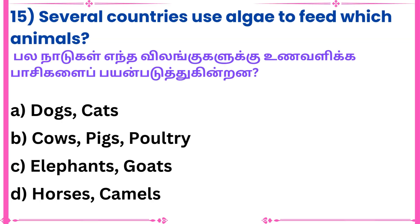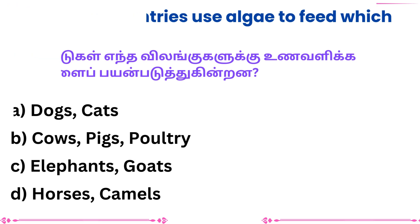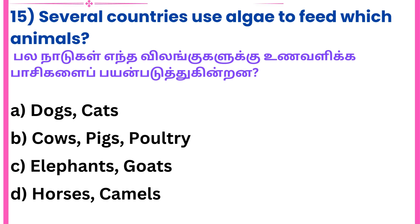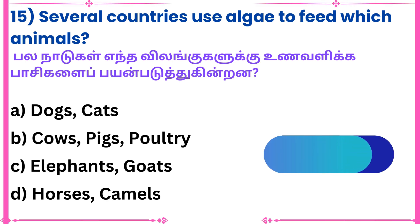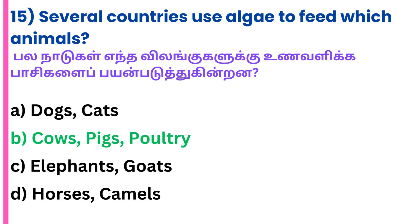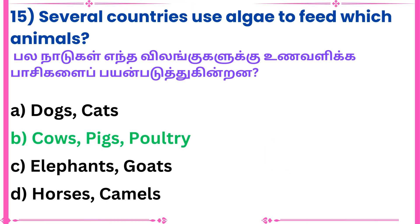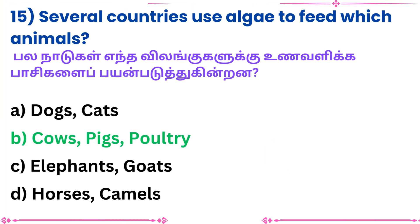15th question: Several countries use algae to feed which animals? Answer: Cows, pigs and poultry.